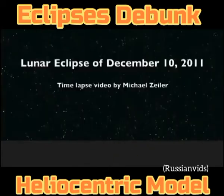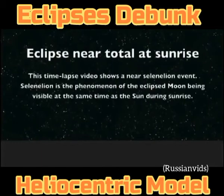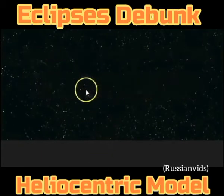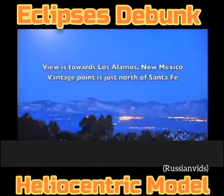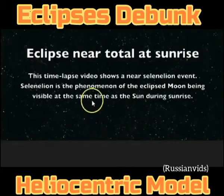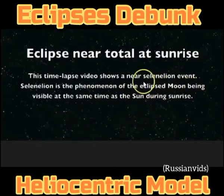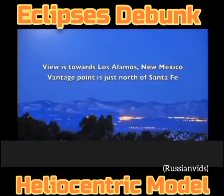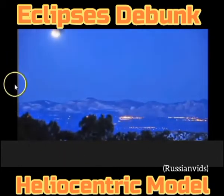Let's take a look at the actual footage itself, starting from the very beginning. It talks about the phenomenon of this eclipse — it's called the selenelion event. Let's take a look at this part right here. Take a look at this time-lapse of the moon, where both the sun — again, this is the sunrise — the sun and the moon are both above the horizon.